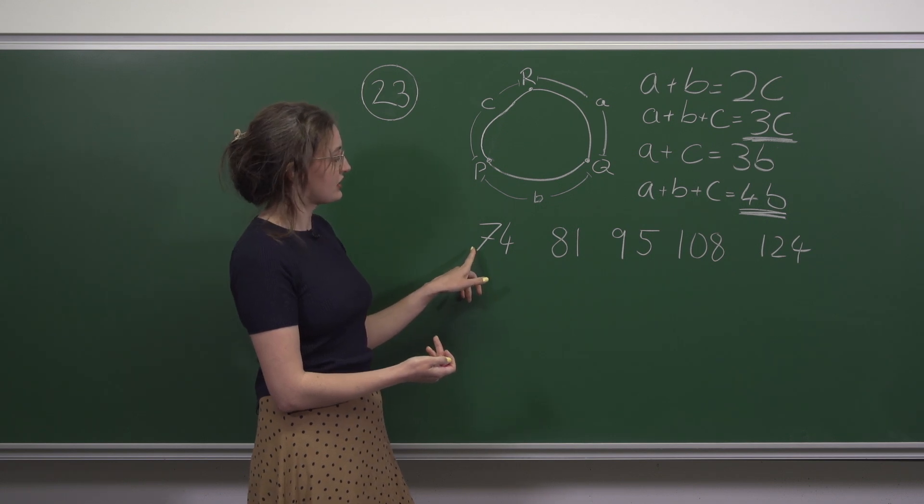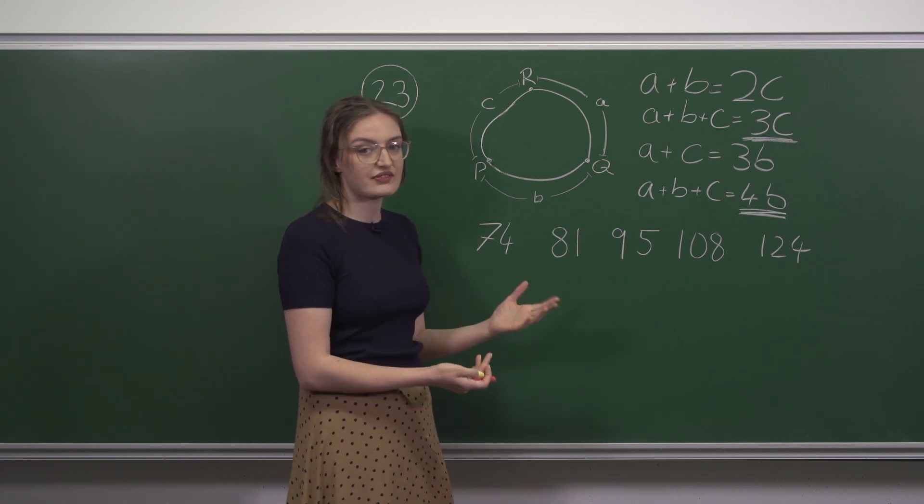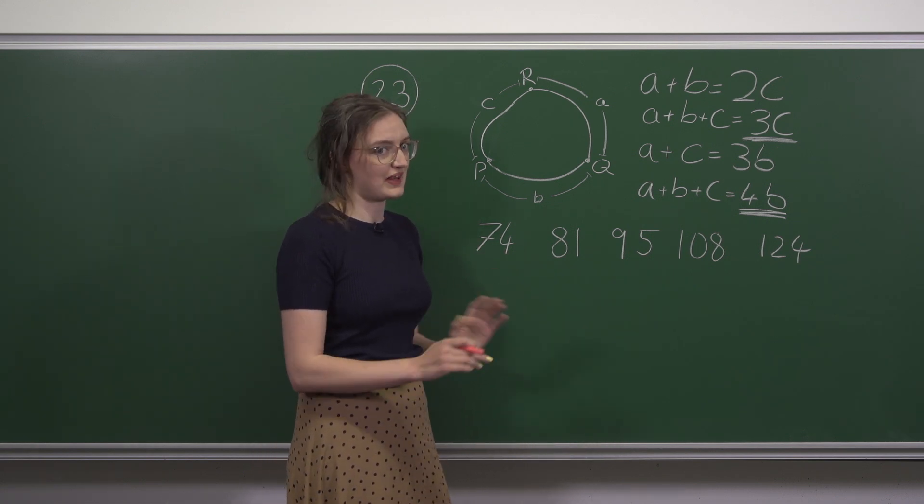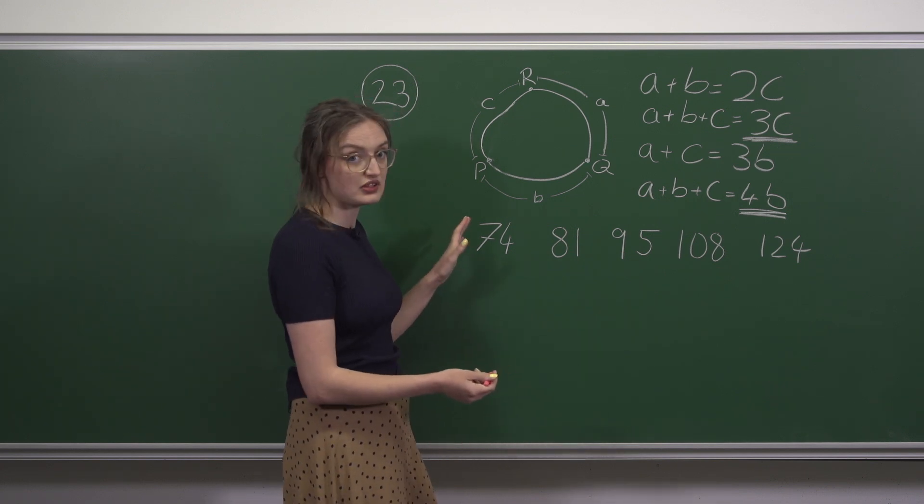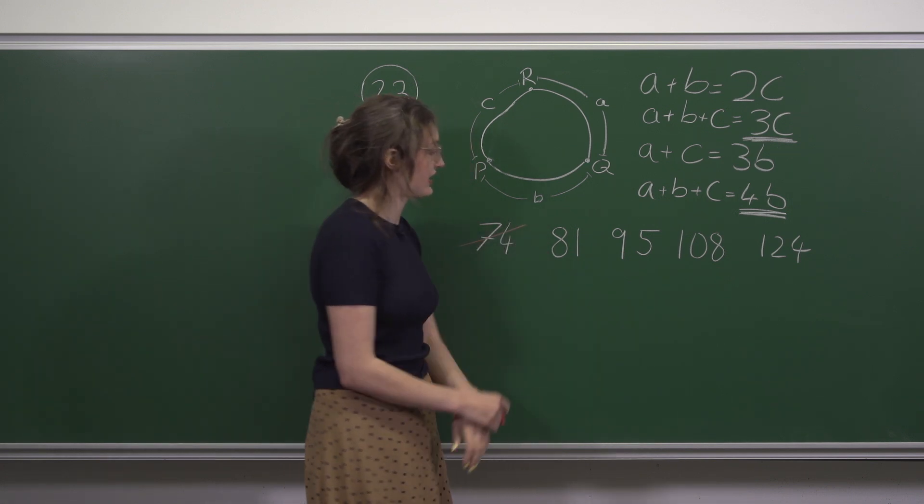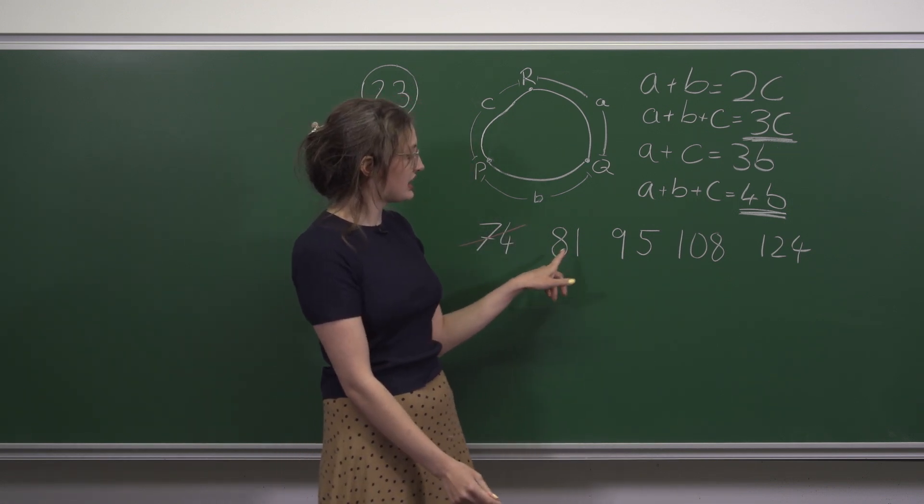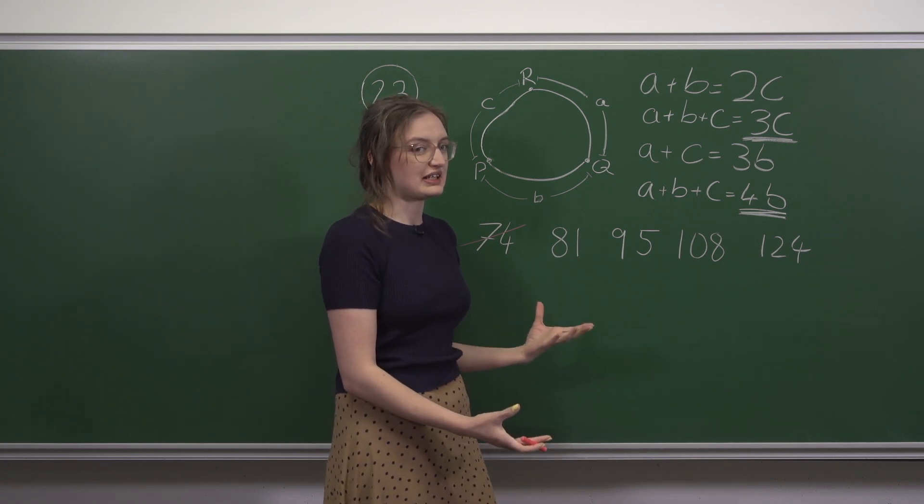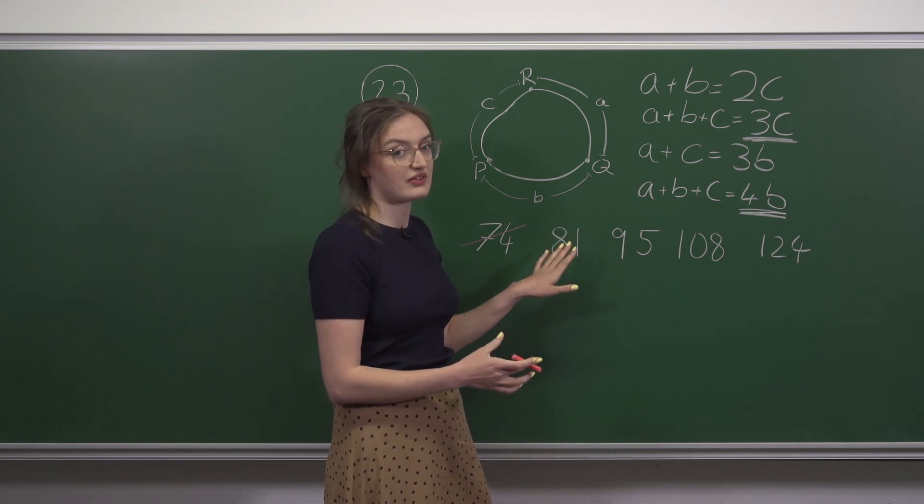So let's start with this one. 74. 7 plus 4 is 11. That's not divisible by 3 so 74 isn't. We can get rid of that. 81. 8 plus 1 is 9 so that's divisible by 3. We'll leave that for now.